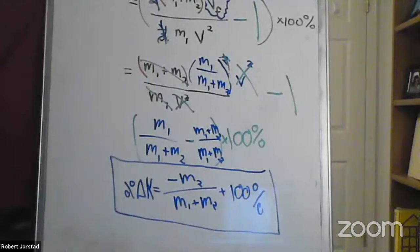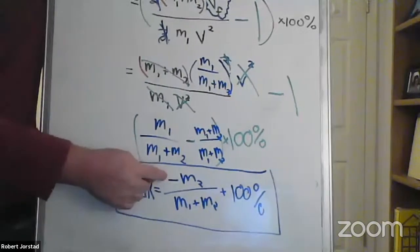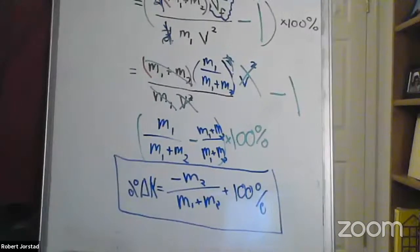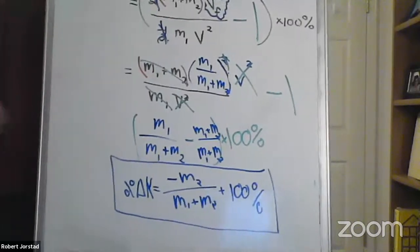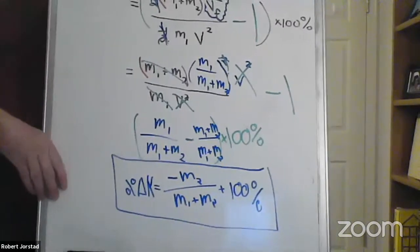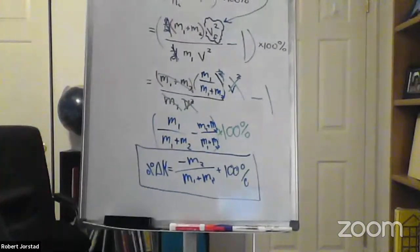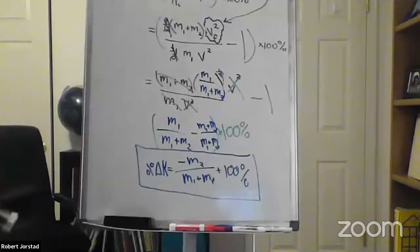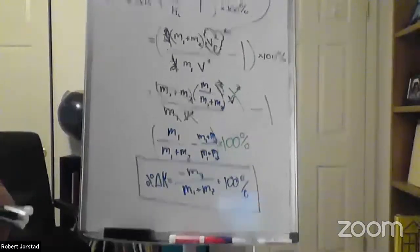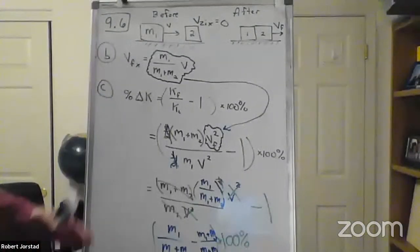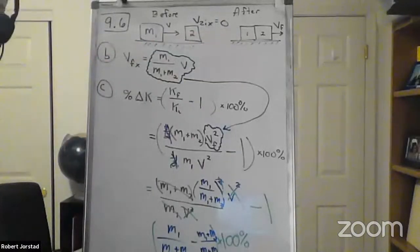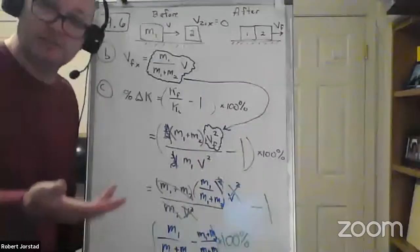Wait a minute — should we be getting a negative number here? What does it mean to get a negative percent delta K? Are you gaining or losing energy? Losing energy. Does that seem reasonable based on this picture? Yes — if you smash into something, you're probably going to lose energy.